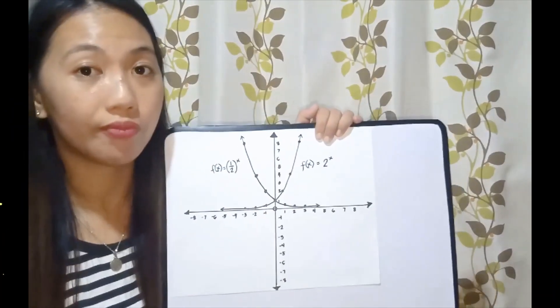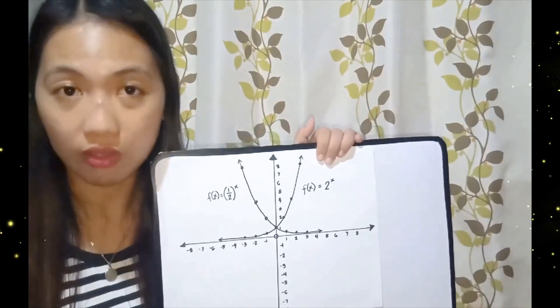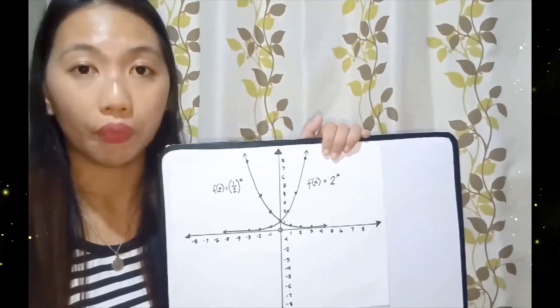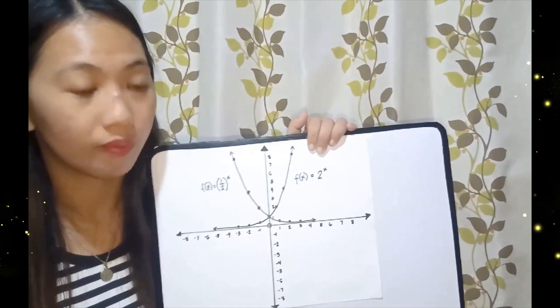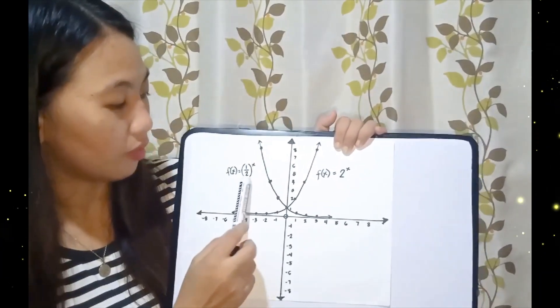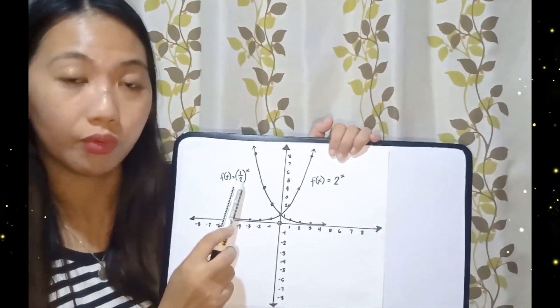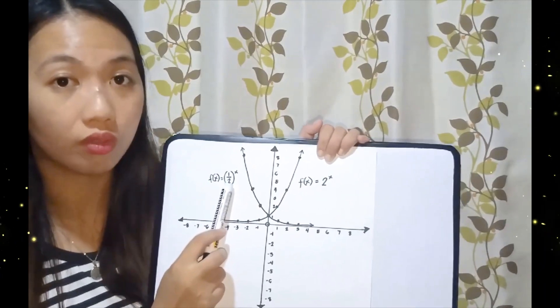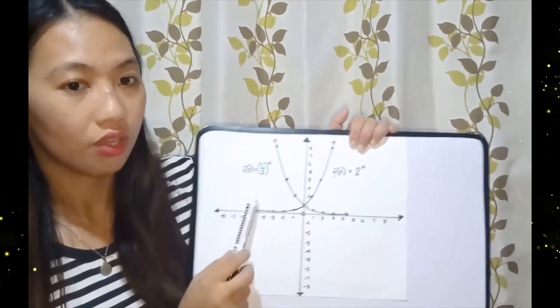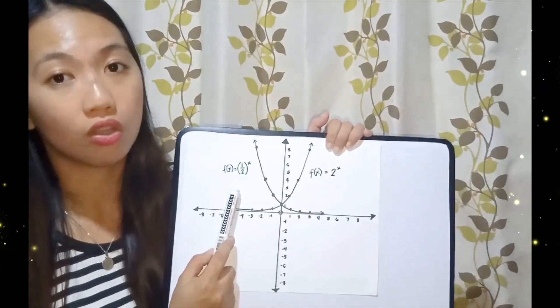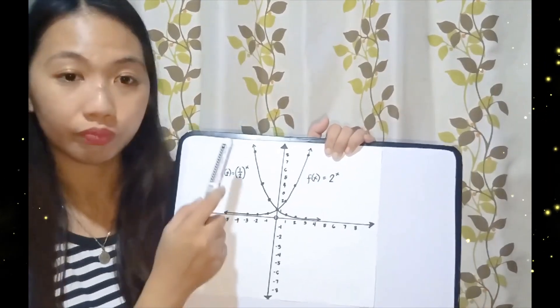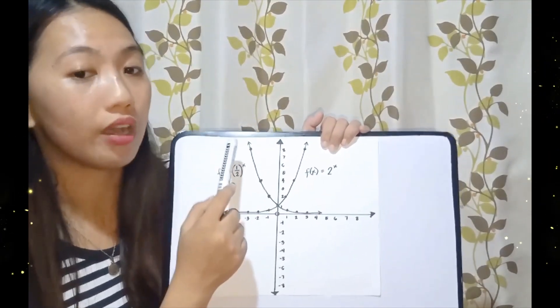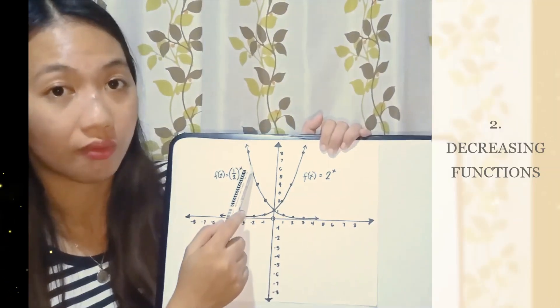The second behavior says that if the value of B is greater than 0 but less than 1, like this, our B is one-half. One-half is greater than 0 but less than 1. So then the graph of the exponential function goes down to the right, and the function is called a decreasing function.